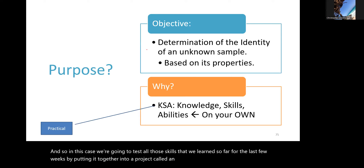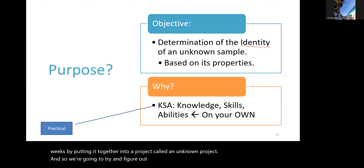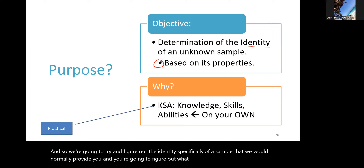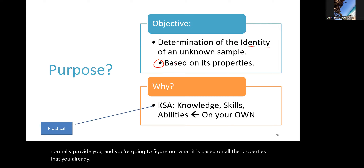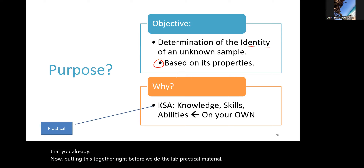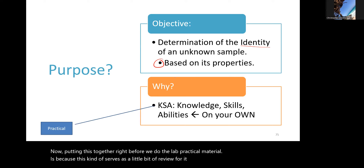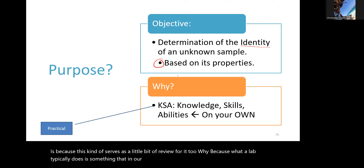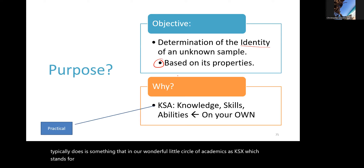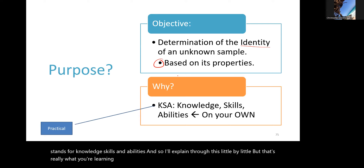We're going to test all those skills from the last few weeks by putting them into an unknown project, figuring out the identity of a sample we provide. This is placed right before the lab practical because it serves as review. Labs test what we call KSAs — knowledge, skills, and abilities — which is really what you're learning in practice and what will go into the practical.